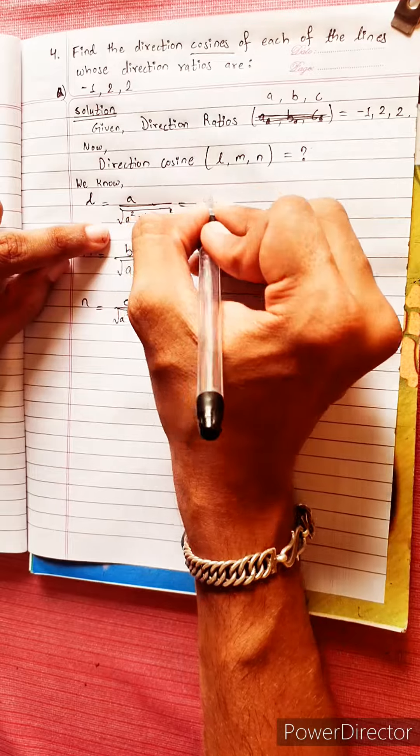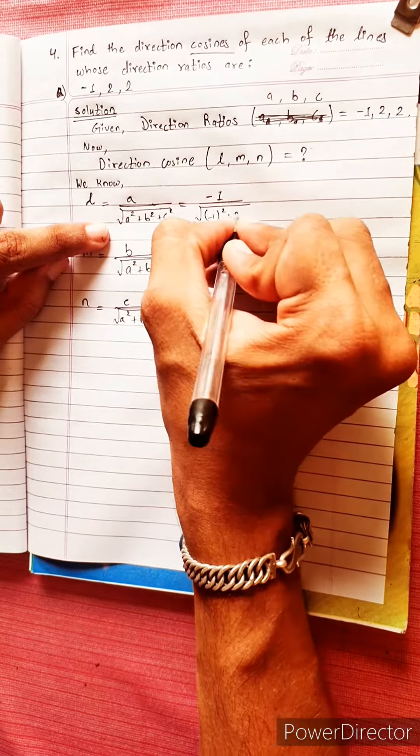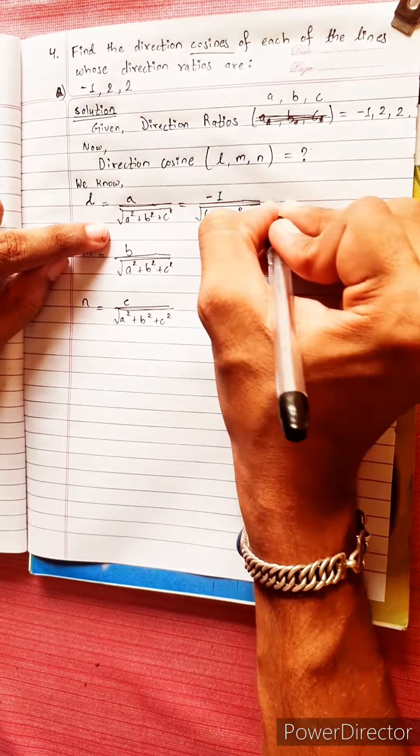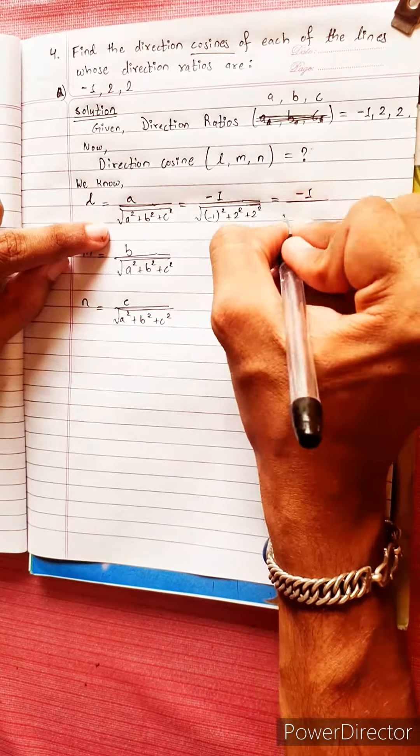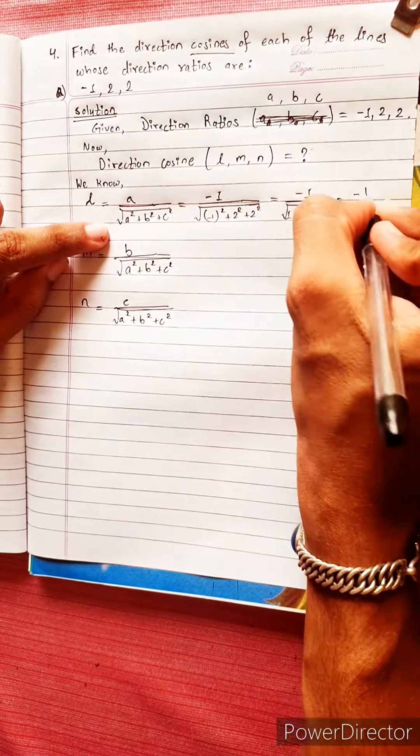Here a is minus 1, minus 1 divided by minus 1 square plus 2 square plus 2 square equals to minus 1 divided by under root 1 plus 4 plus 4, 8 plus 1 is 9, minus 1 by 3.